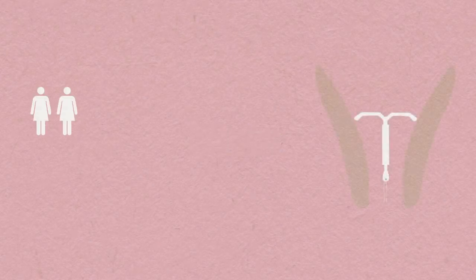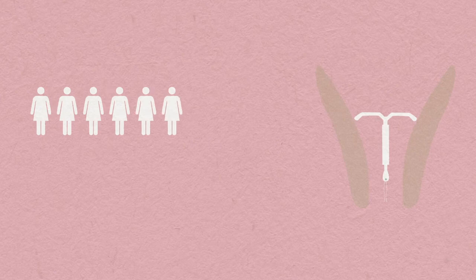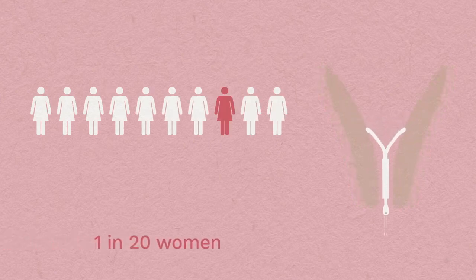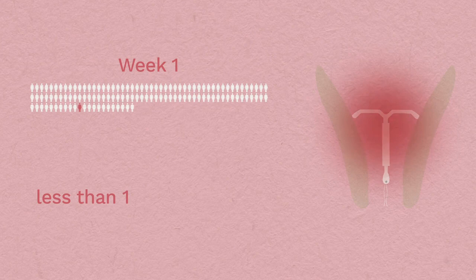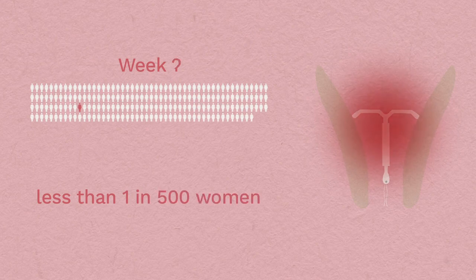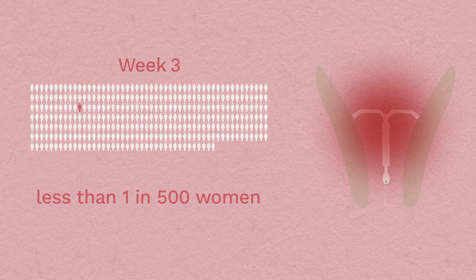Risks. Most women have no problems. Occasionally, the device can be pushed out of the womb. This is most common in the first year of having the device. There's a small risk of infection. This is most common in the first three weeks, after which the risk becomes much lower.